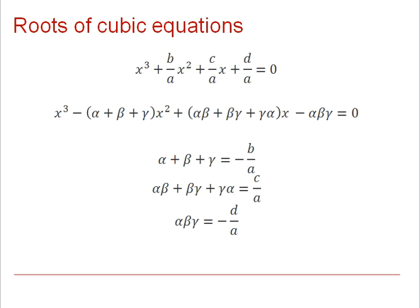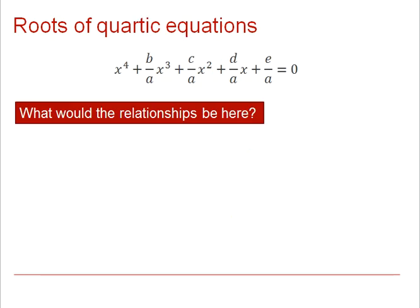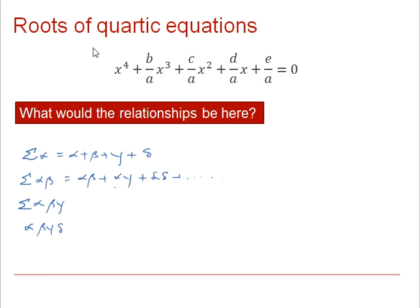If we take this upper power to the quartic equations, then the pattern will continue. You may wish to pause here and think through the relationships for yourself. It may also be useful at this stage to introduce some slightly different notation. For example, we can write sigma alpha to actually mean alpha plus beta plus gamma plus delta, where delta is that fourth extra root. We could write sigma alpha beta to be all of the pairwise options. Similarly, for alpha beta gamma, all the three-wise options. And then, of course, we're still going to have this product alpha beta gamma delta.